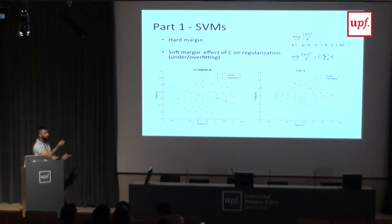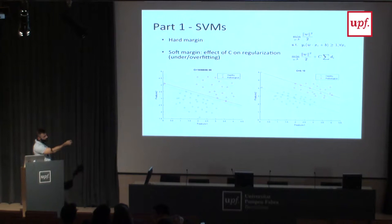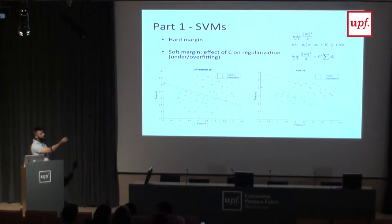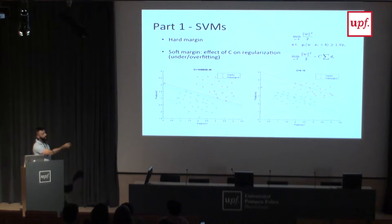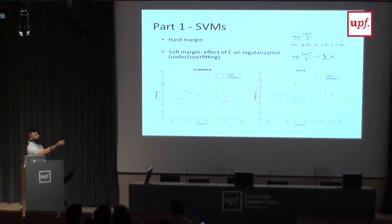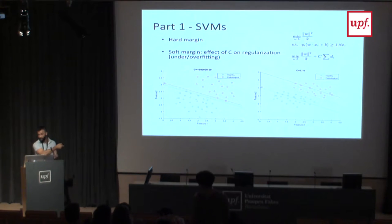If you use a really high C, you take into account all of your points, so every single point falls between the corresponding section of your plane. With a low value of C, you say you're more flexible in your model, so some values might be in the wrong category. In the end we find this to be more accurate, because the high-C case is a clear example of overfitting — a single atypical value is significantly influencing the entire classification.